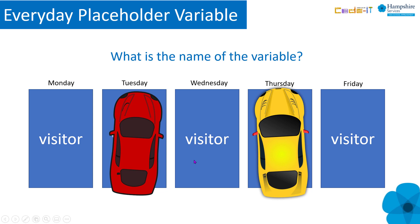Sushi Grover in her research identified that pupils who had spent time looking at the concept away from code in a story context first had a deeper understanding of the concept when it was used in code later. What is the name of the variable? Well, it's 'visitor' in this case.